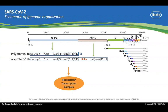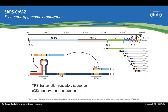The making of subgenomic RNA is through a process called discontinuous transcription. There is a transcriptional regulatory sequence, TRS, at the 5' end of each of the structural proteins and accessory proteins, as well as at the 5' end of ORF-1A. During transcription, when the replication-transcription complex reaches any one of those TRS sequences, the newly synthesized conserved core sequences can switch template and jump forward to base pair with the leader sequence at the 5' end of ORF-1A, incorporating the leader sequence into negative-sense intermediate subgenomic RNA, which is then converted into positive-sense subgenomic RNA. The host ribosome then translates subgenomic RNA into structural proteins and accessory proteins required for viral replication.